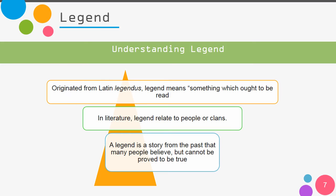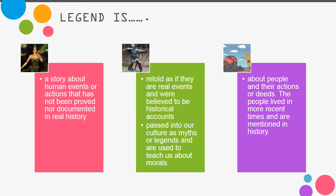In literature, legends relate to people or clans. A legend is a story from the past that many people believe but cannot be proved to be true. Legend is a story about human events or actions that hasn't been proved nor documented in real history — usually passed down orally, from mouth to mouth.